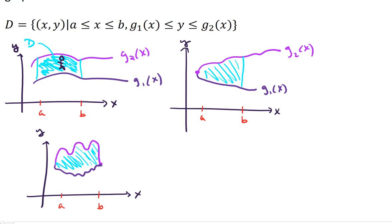Okay, and so all three of these pictures represent type 1 regions. There are also type 2 regions and we'll talk about that in another video.